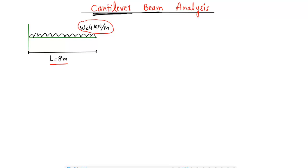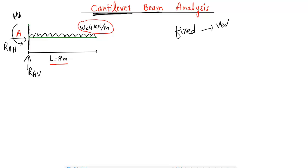Let's consider the support reaction at point A. A cantilever beam always has one fixed support. This fixed support can take three kinds of reactions: the vertical reaction R_A vertical, the horizontal reaction R_A horizontal, and the moment M_A. So a fixed support can resist vertical load, horizontal load, and the moment acting at its support point.